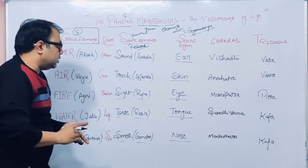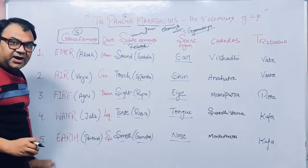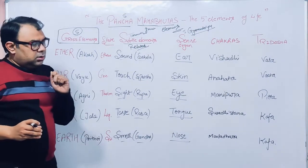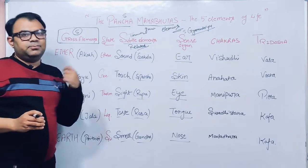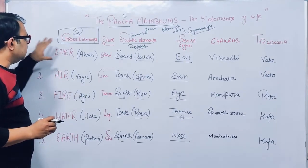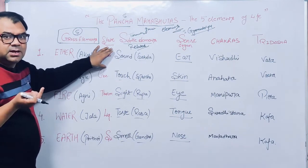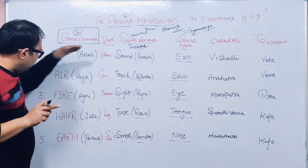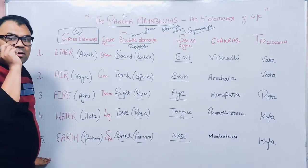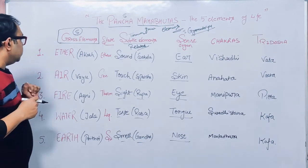Before going further, let us understand a philosophical difference. As per Hinduism, there are five elements. However, Charvaka philosophy and Buddhism do not consider Akash (ether) as an element of life. So Buddhism and Charvaka philosophy recognize only four basic elements: air, fire, water, and earth.